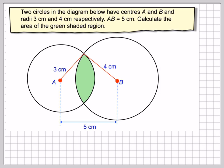So we want to calculate this region here. One thing to notice is if this is 5 and this is 3 and this is 4, this angle here will be right-angled.